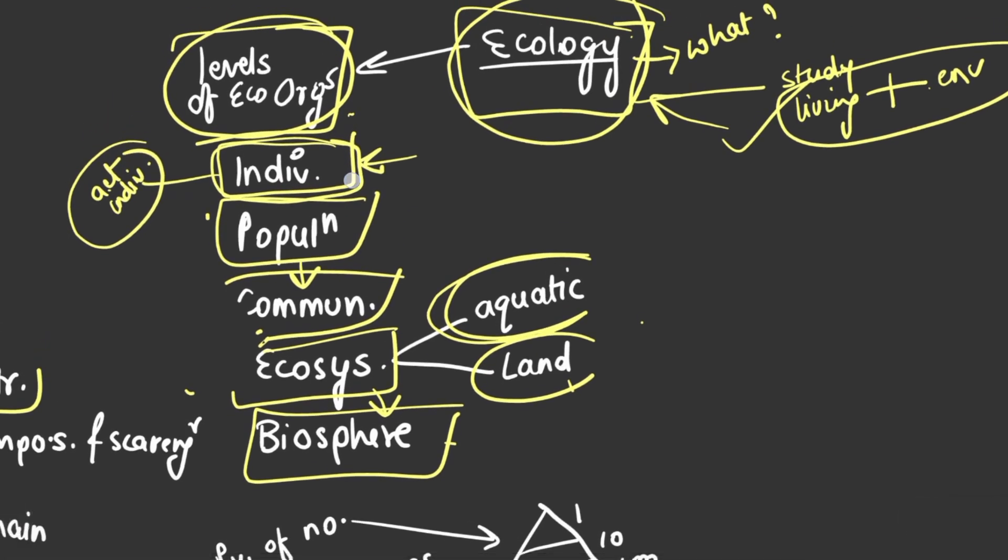Then a group of individuals together, basically of the same species in a defined area. If individuals of the same species live in an area, we call it population.